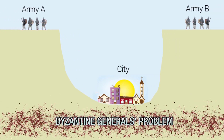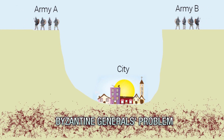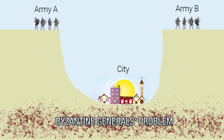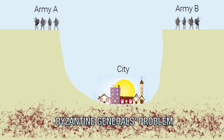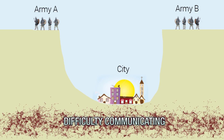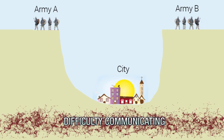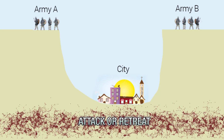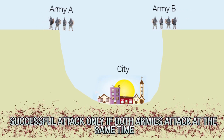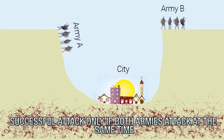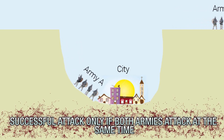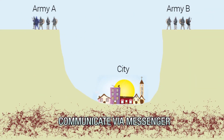Imagine two generals of the Byzantine army surrounding a city they want to attack and take over, as shown in this photo. Each general has a group of soldiers at his command, but the two groups are separated from one another and therefore have a difficult time communicating. Both generals have two decisions they can choose from: attack the city or retreat. But here's the catch — an attack on the city would be successful only if both their armies attack at the same time.